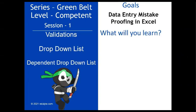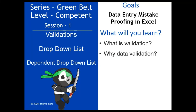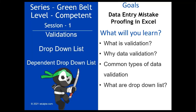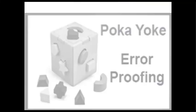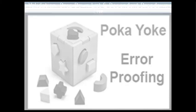What are we going to learn? We will talk about what is validation, why data validation, common types of data validation, and what are drop-down lists and how to create a drop-down list. Also, Poka-yoke or error proofing — if you want to learn about this concept, go to the description of this video and you will find a video explaining it in detail.